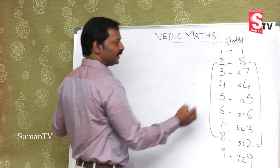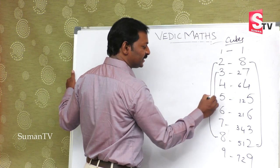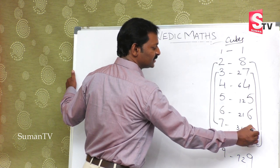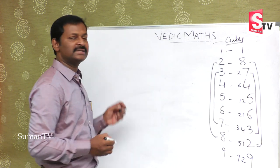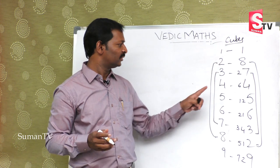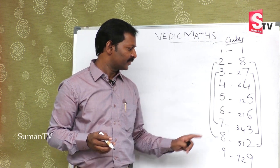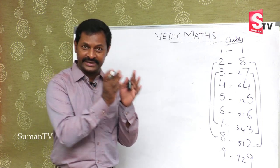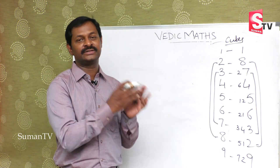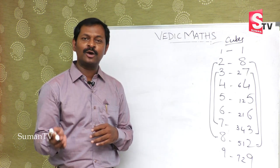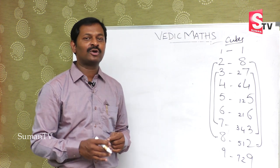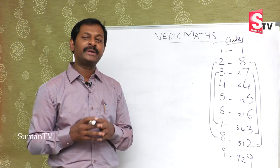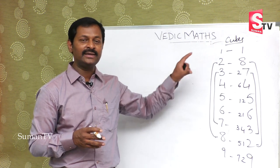3 combination is 7, and 7 combination is 3. So to recap: 1→1, 4→4, 5→5, 6→6, 9→9; 2 combination is 8, 8 combination is 2; 3 combination is 7, 7 combination is 3. We use this logic in the cube root.